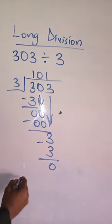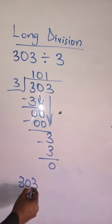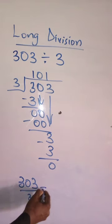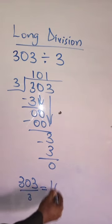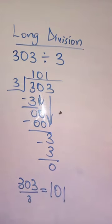So the value of 303 divided by 3 is equal to 101. Have this clear. Thank you.